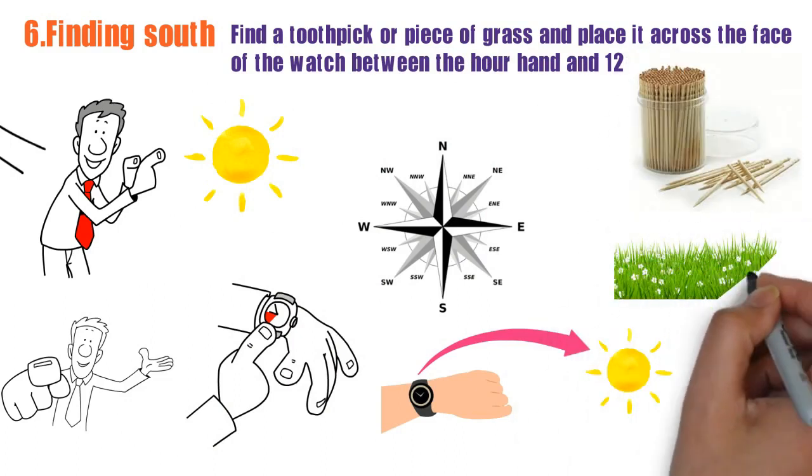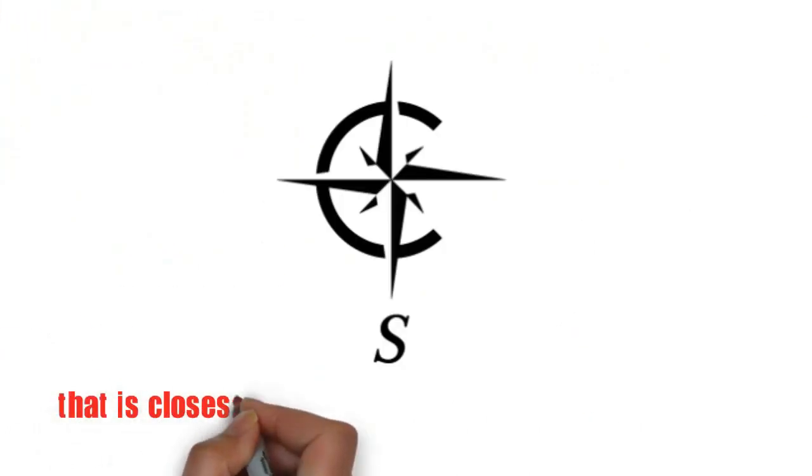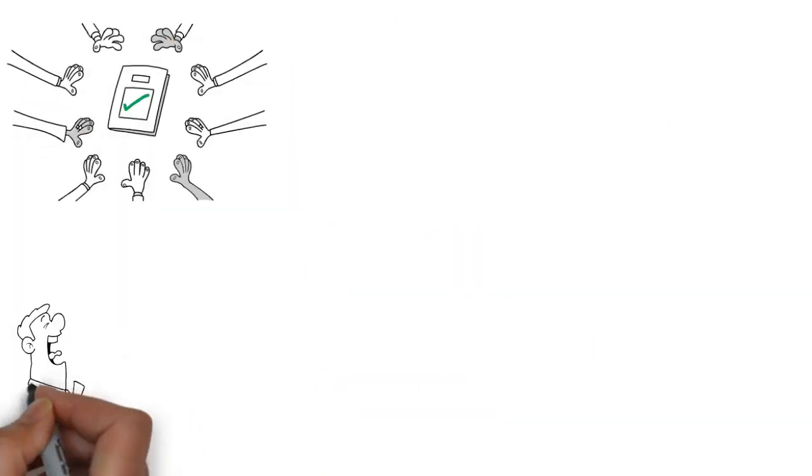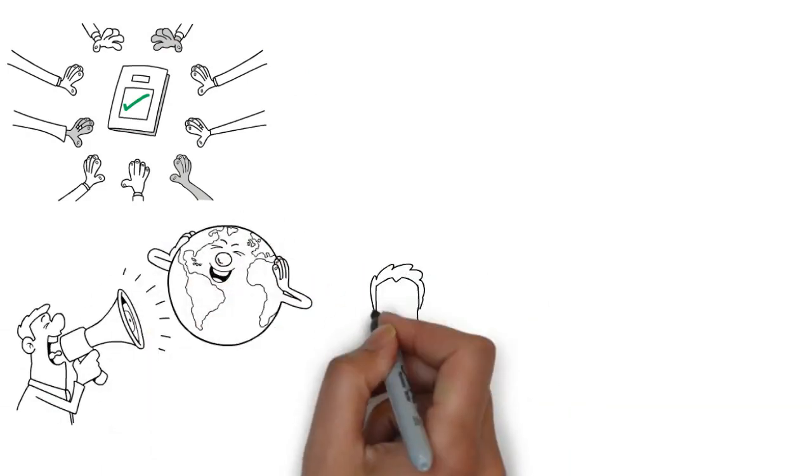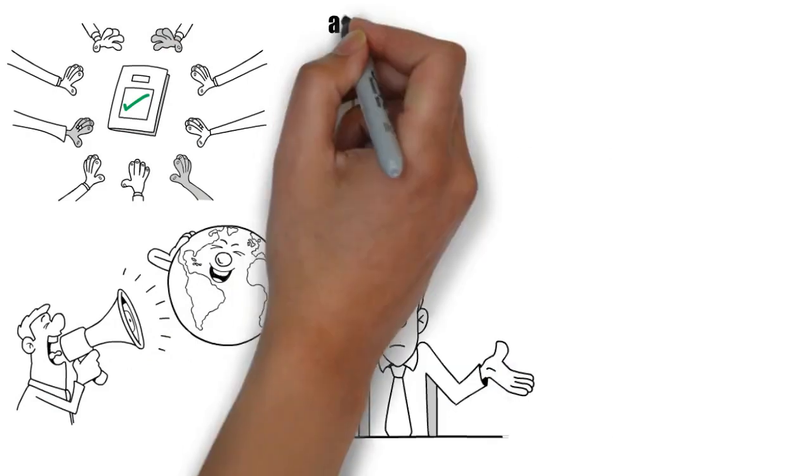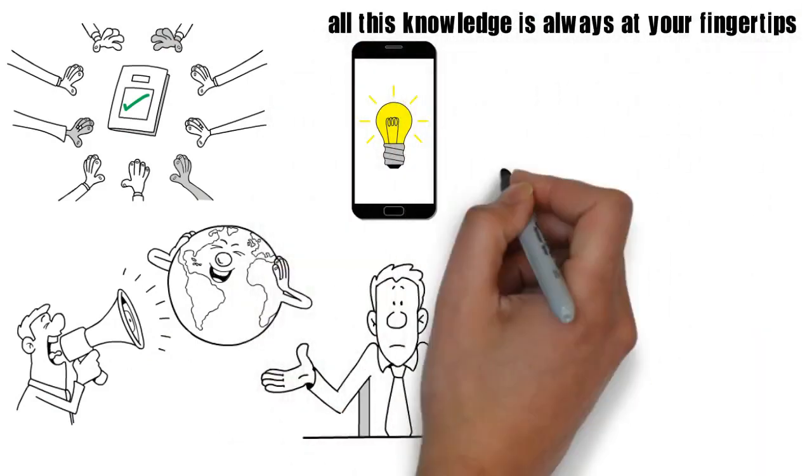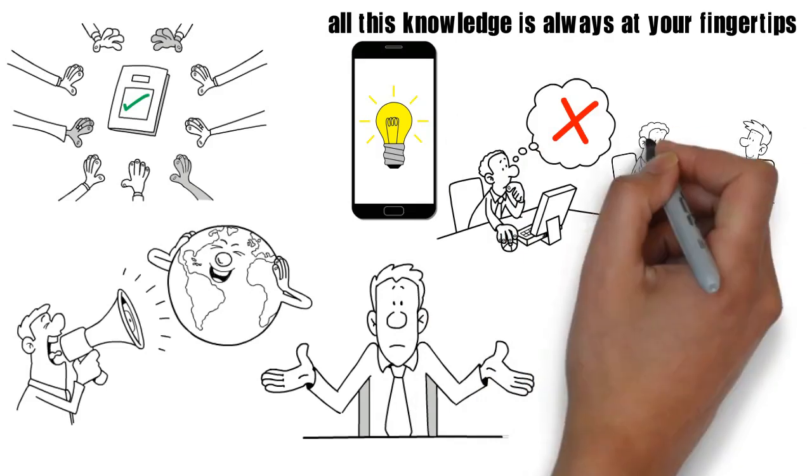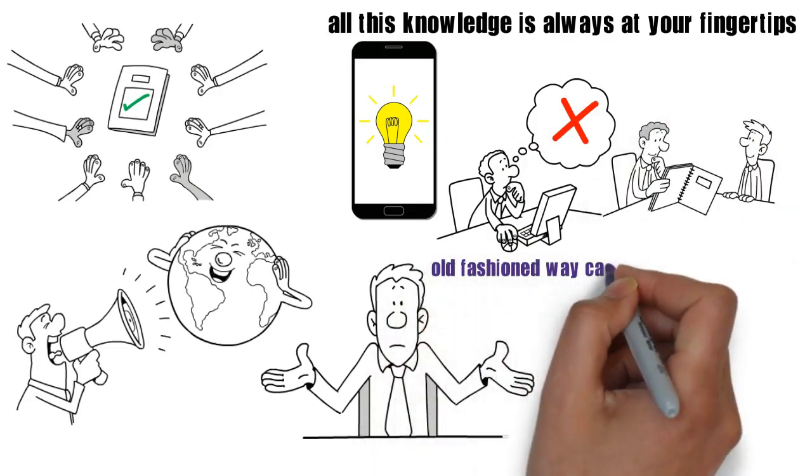With so many helpful ways to remember these tidbits, life just got a little easier. Yes, having smartphones means that all this knowledge is always at your fingertips. But when you can't get a signal, knowing how to do it the old-fashioned way can still come in handy.